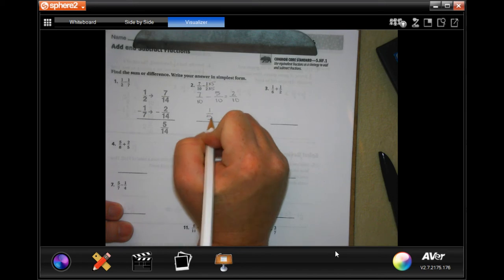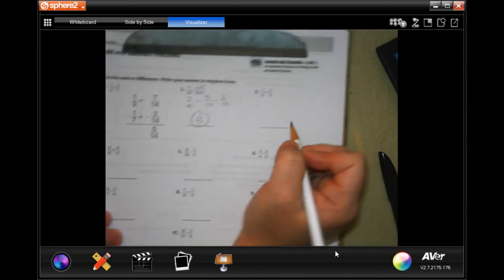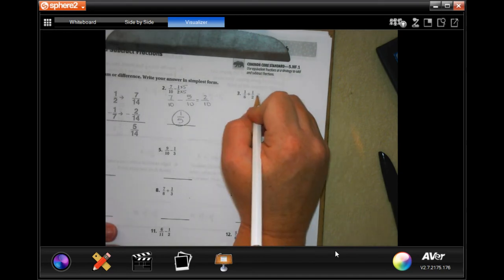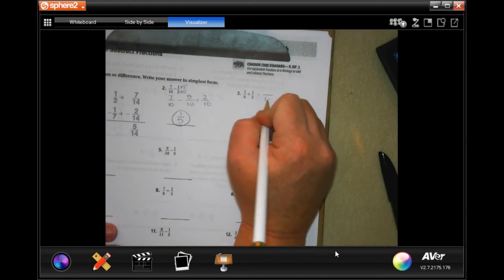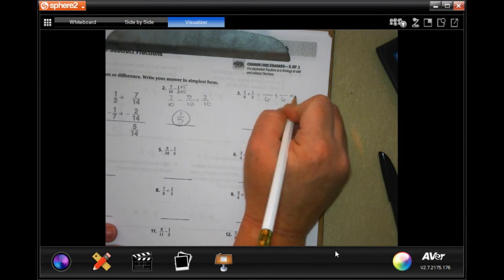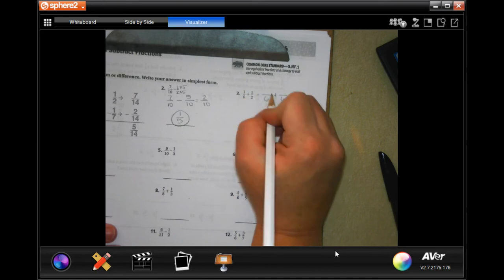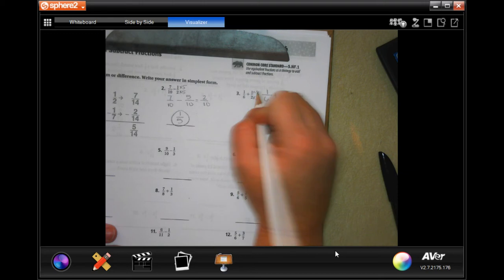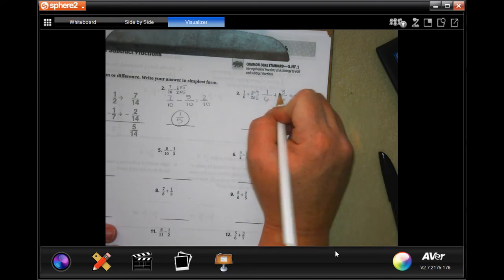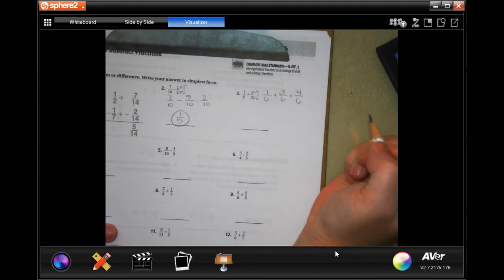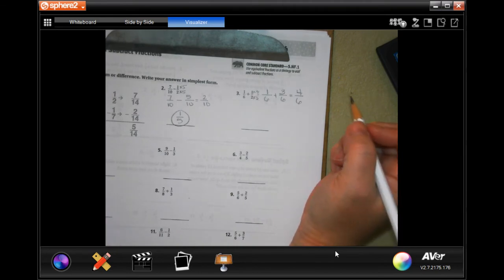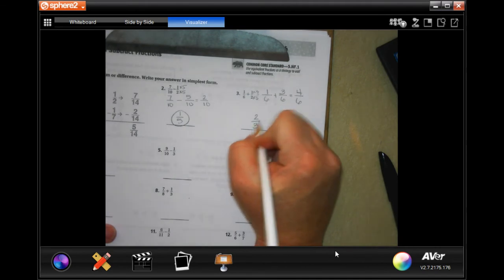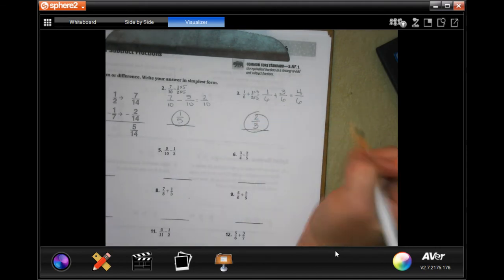For the next one, the lowest common denominator is going to be six. This one is already a six, I'm going to keep it. This one I had to multiply by three to get to six, so I'm going to multiply the top by three and get three. One plus three is four. Four and six are both even numbers so I'm going to divide them both by two: four divided by two is two, six divided by two is three. Done.